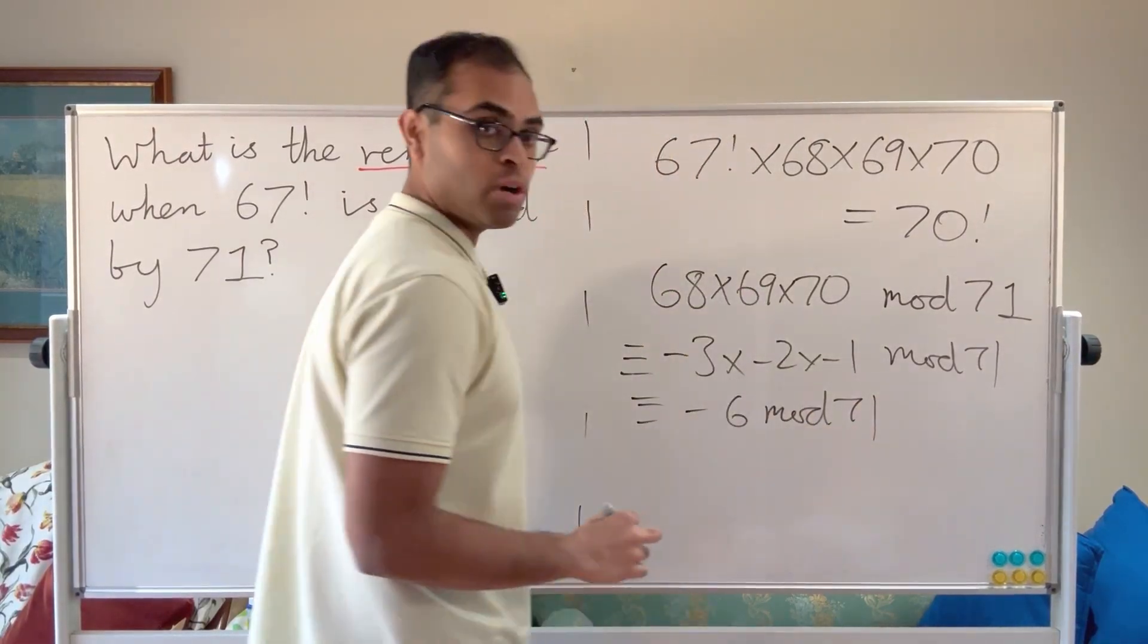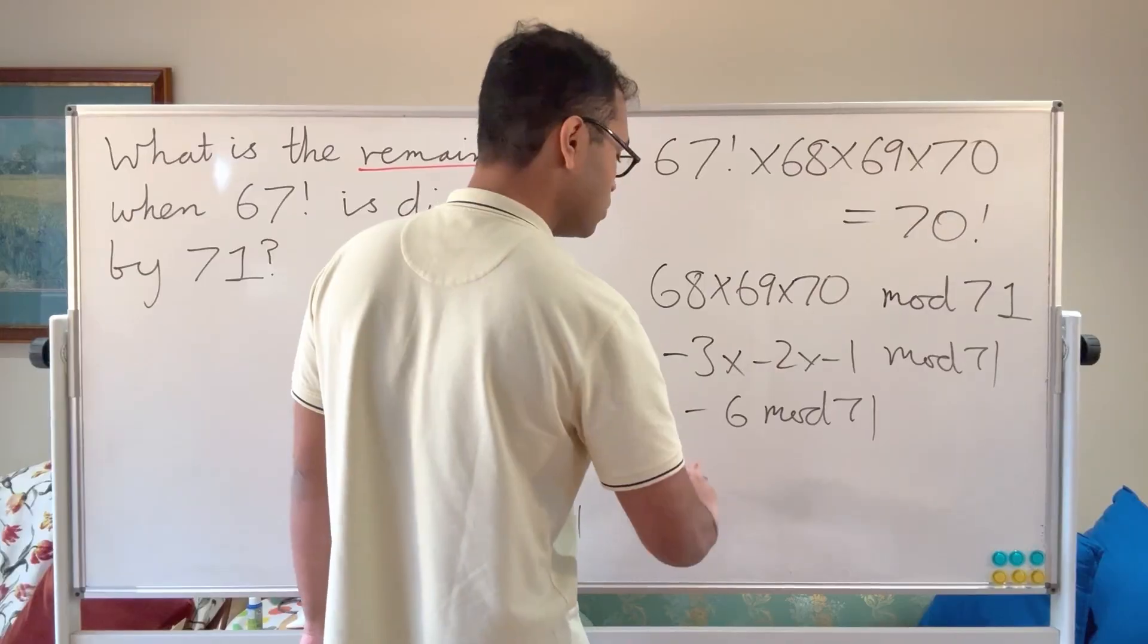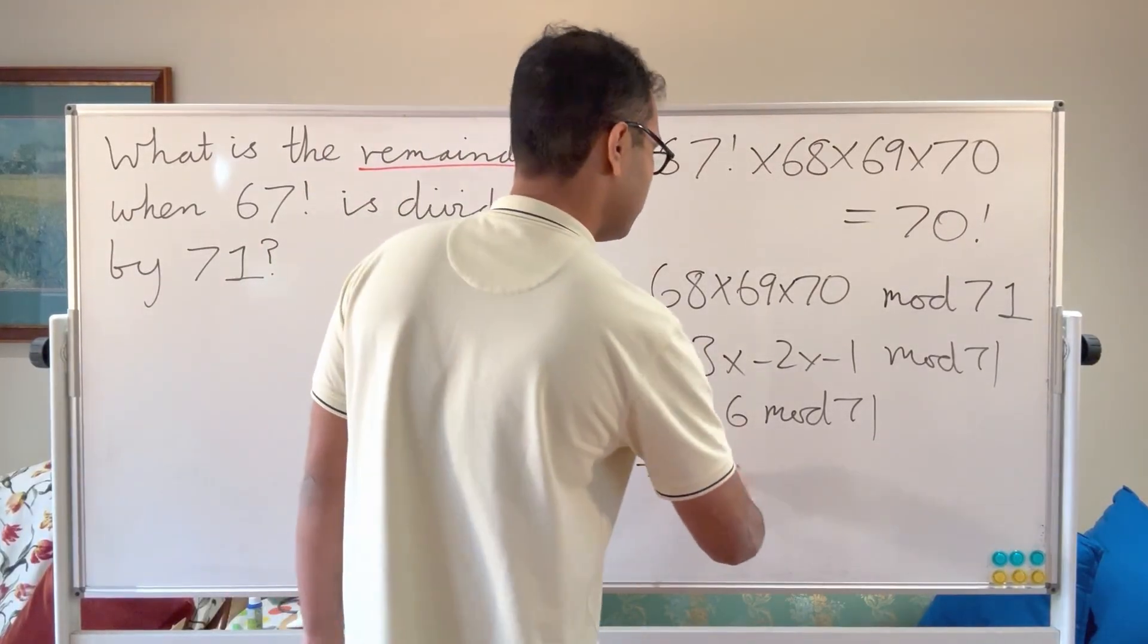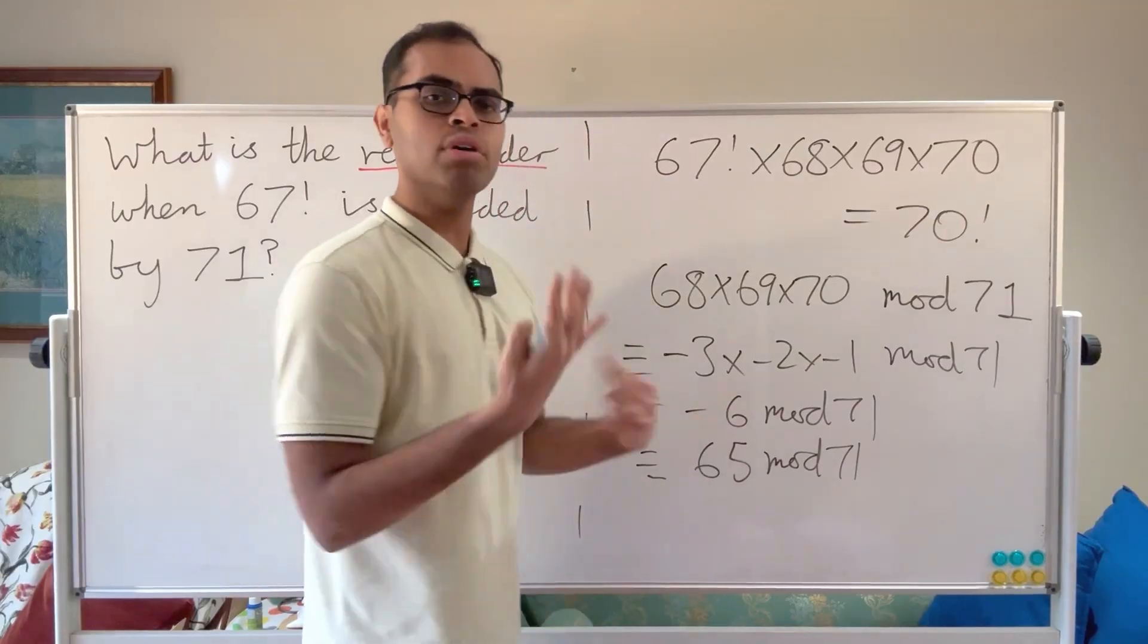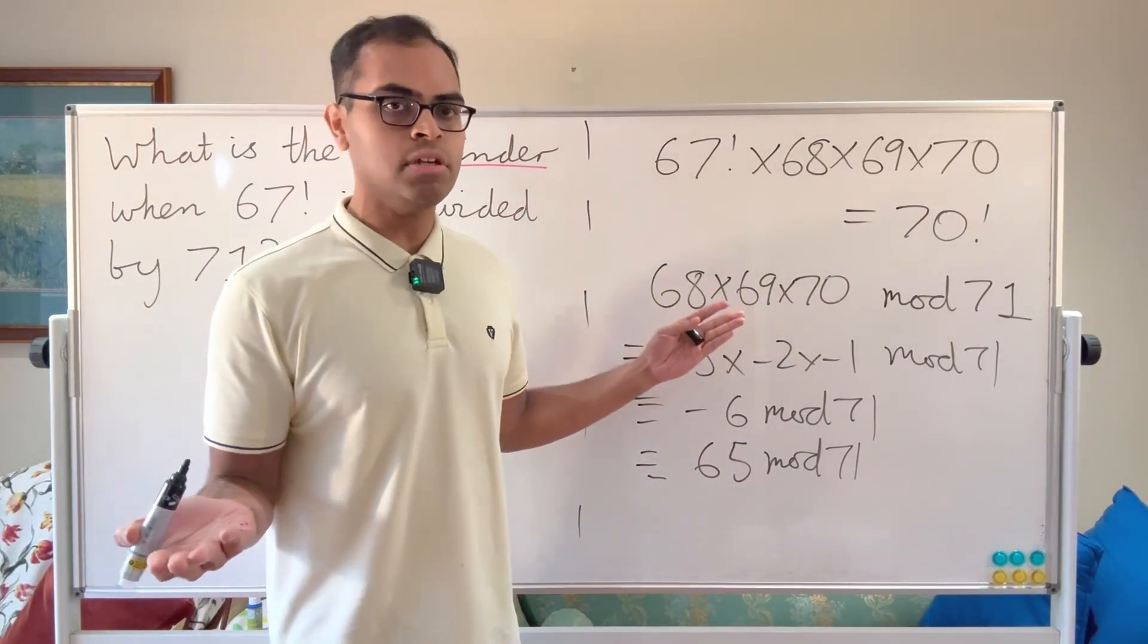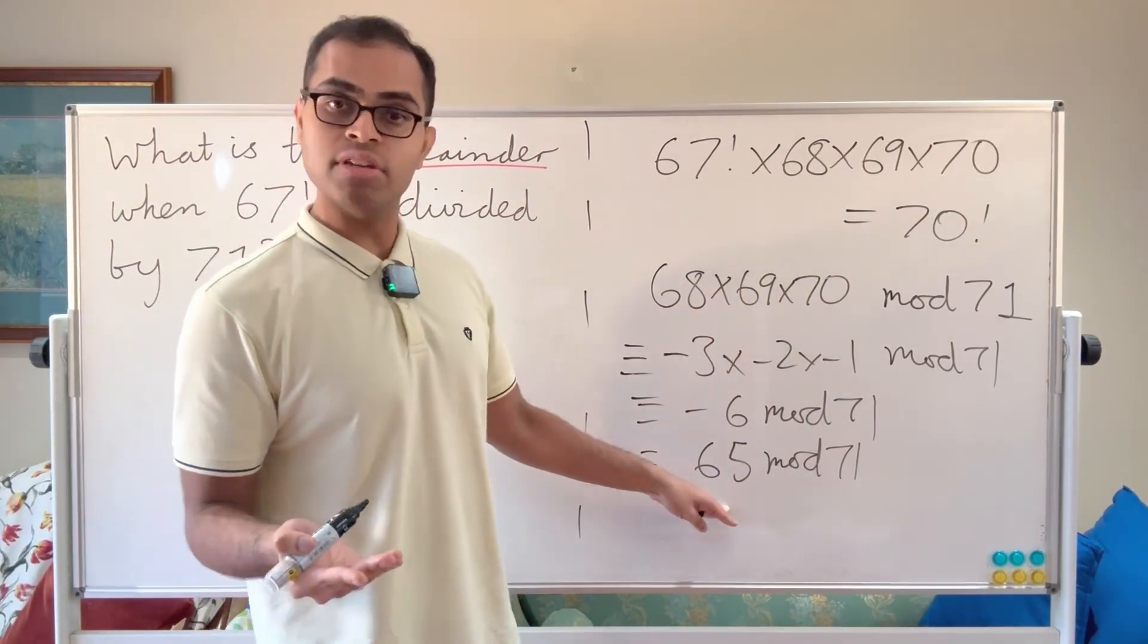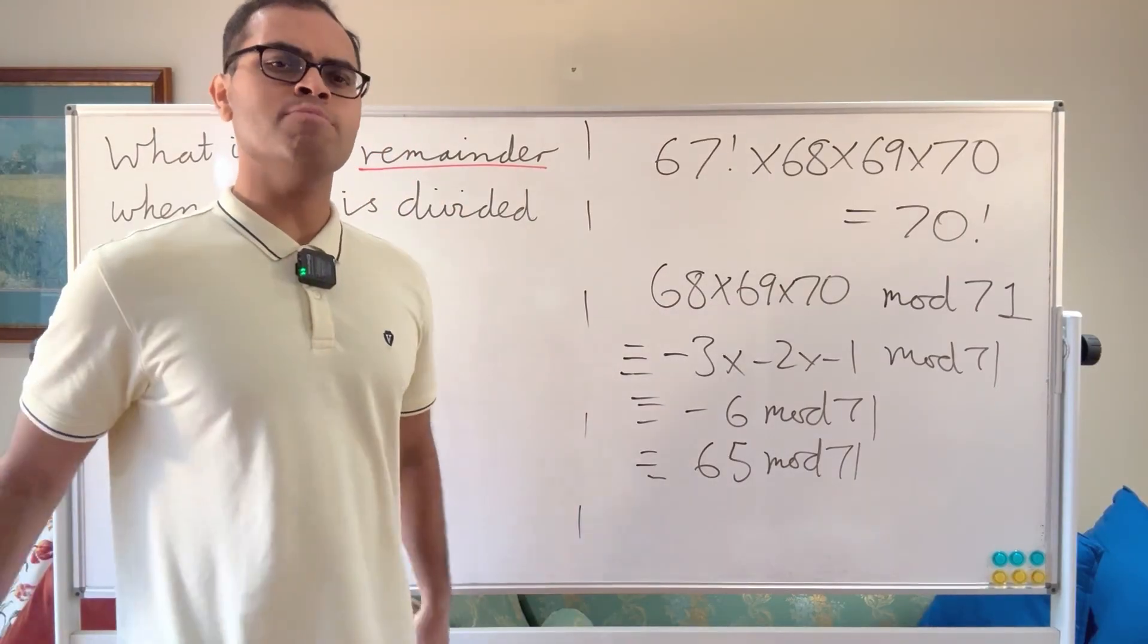And of course, minus 6 mod 71 is just going to equal 65 mod 71. So that gives you a quick idea of how we found the remainder when we divided that product by 71 and got 65. That's the power of modular arithmetic.